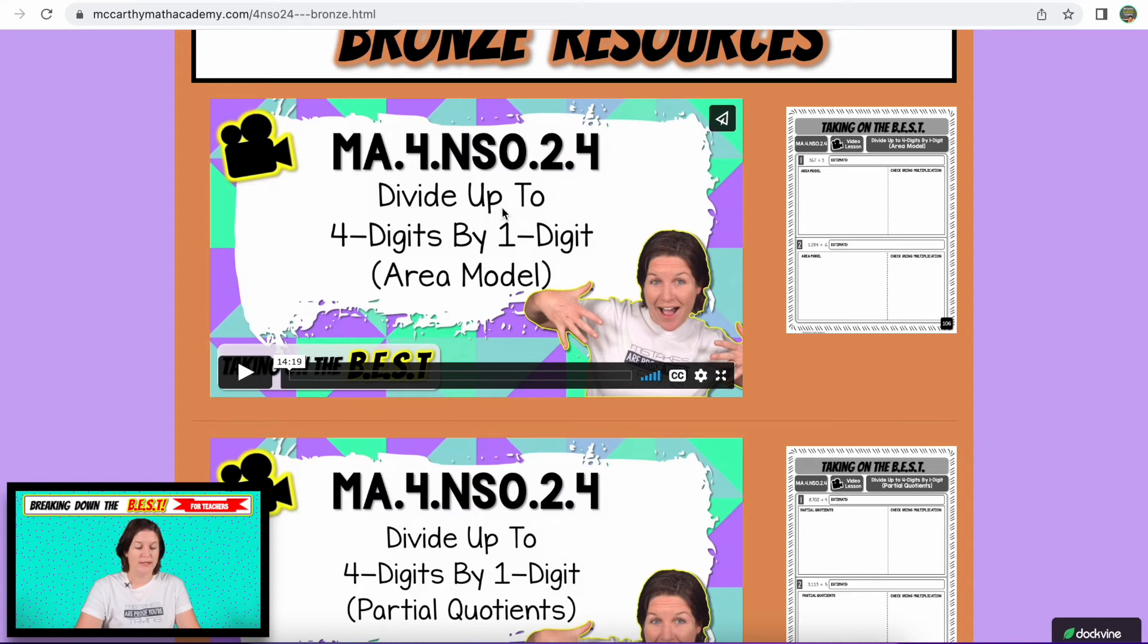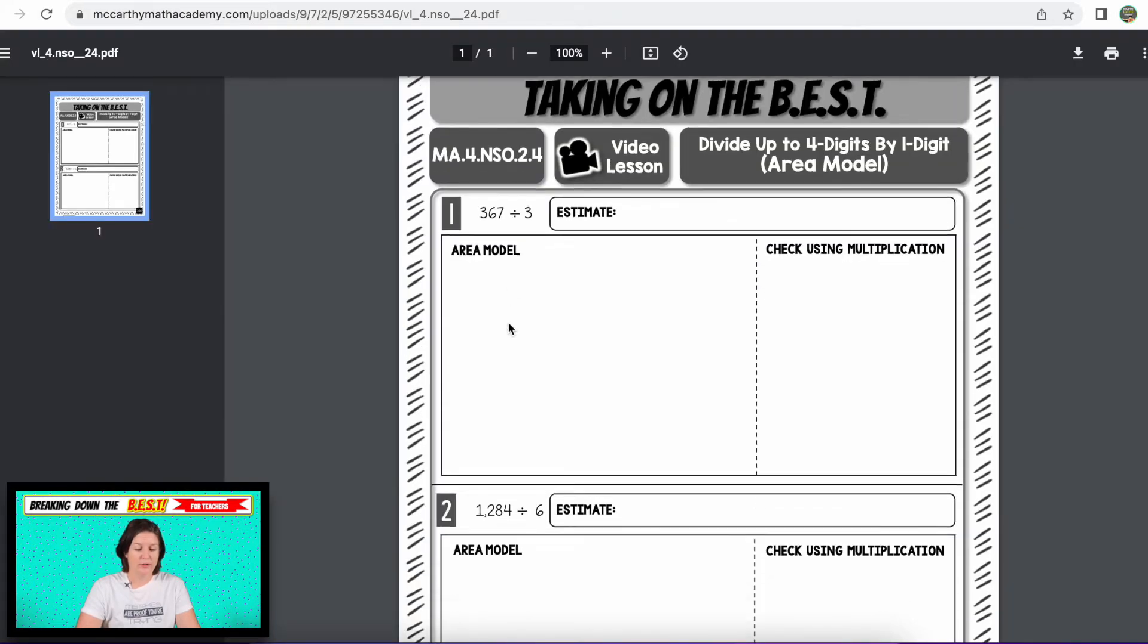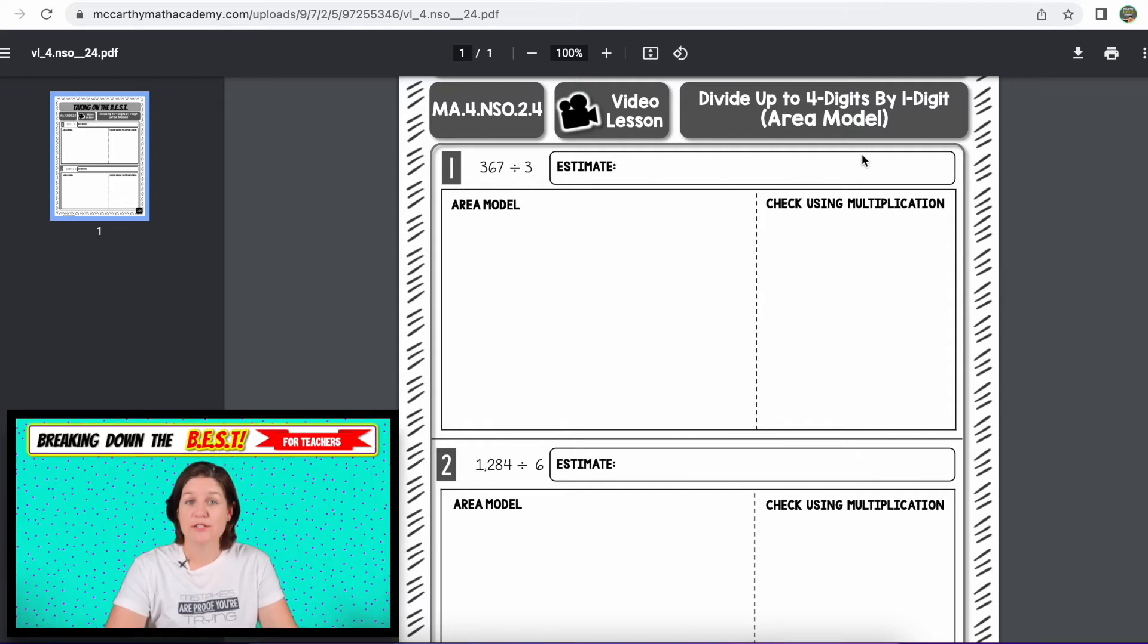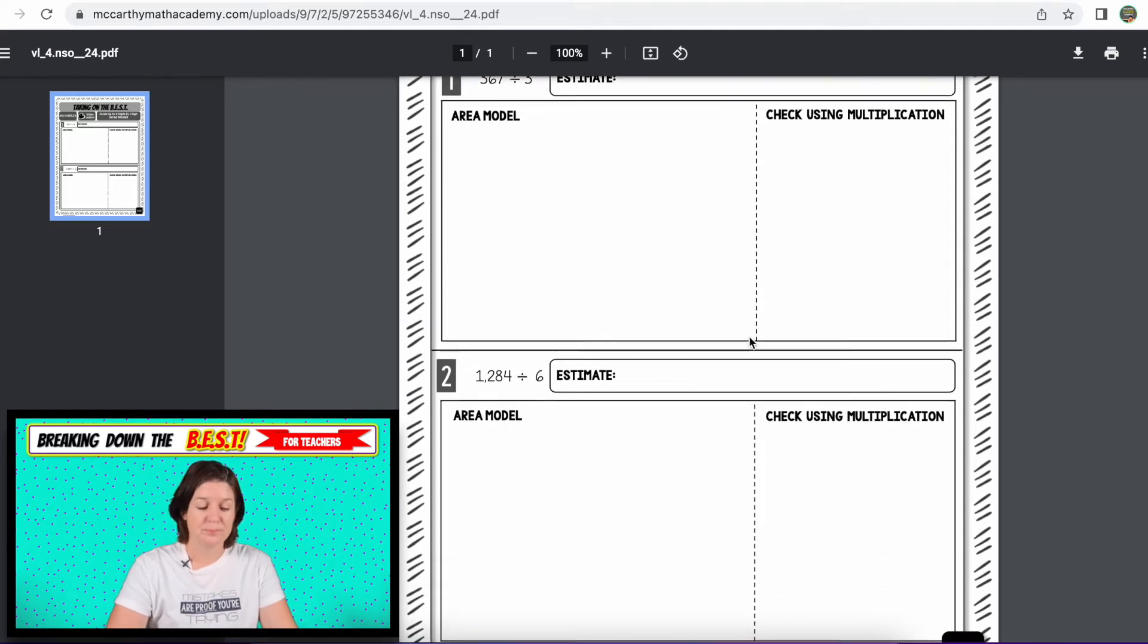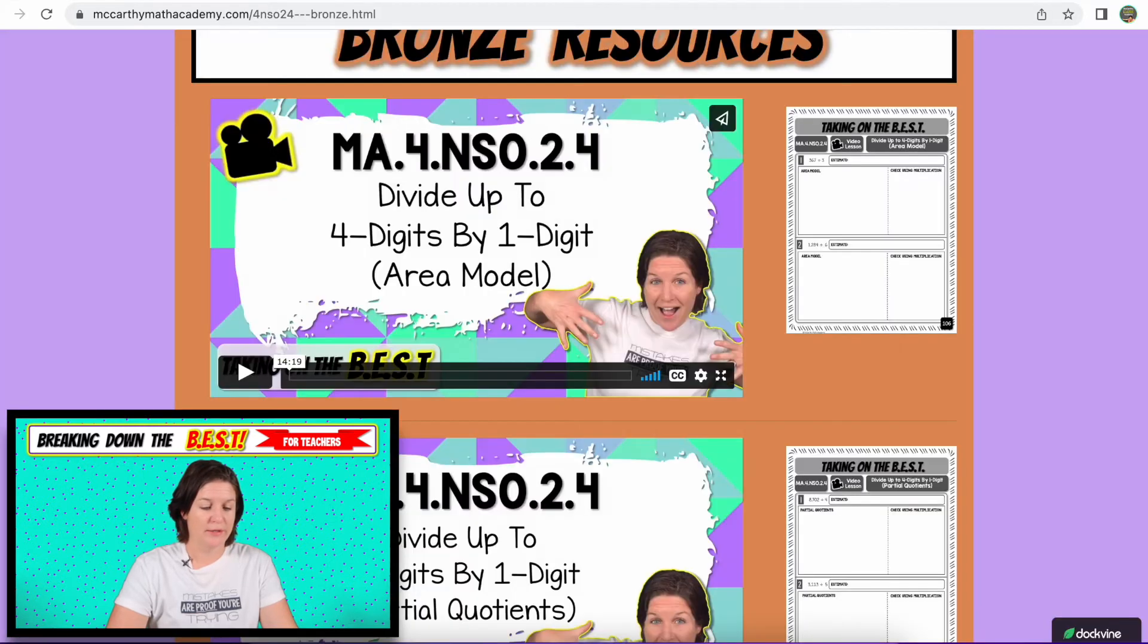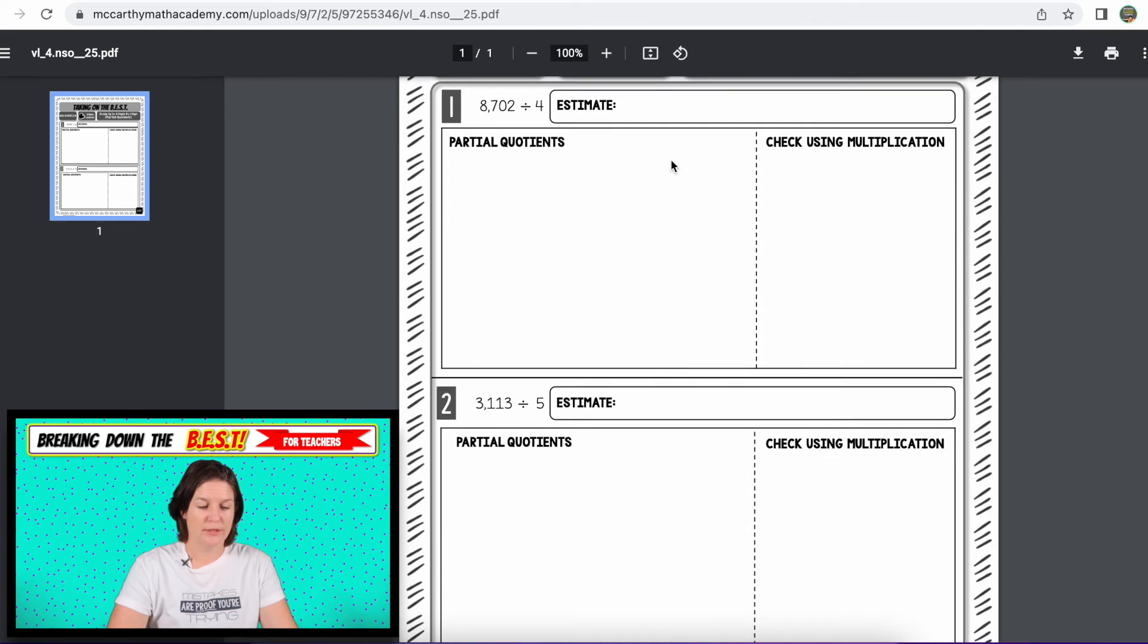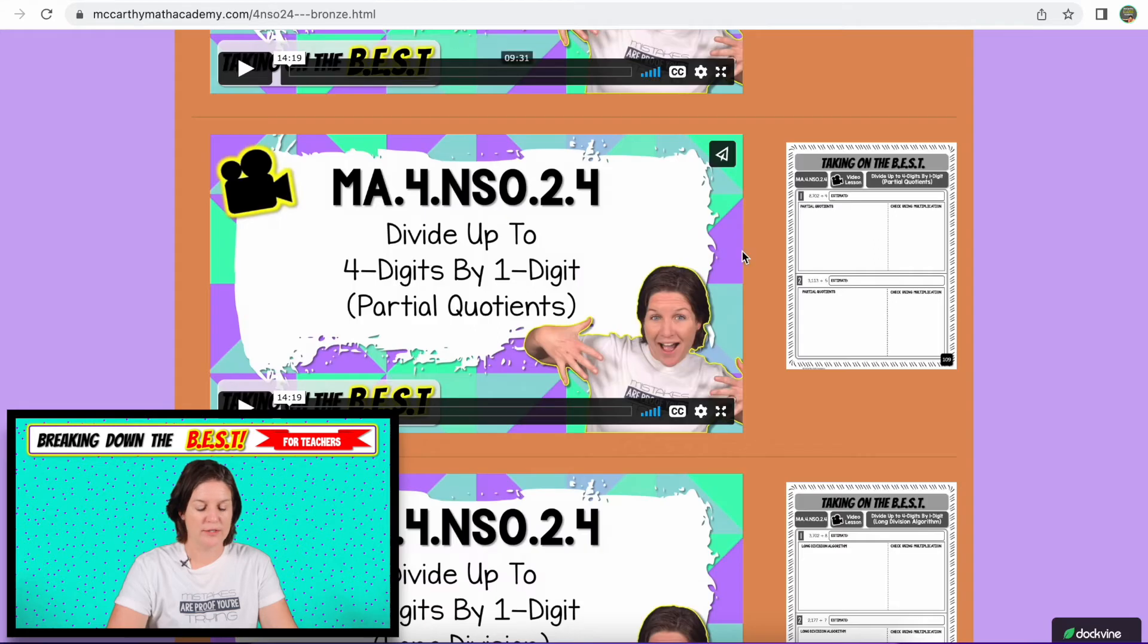The first one is dividing up to four digits by one digit using the area model and also checking using multiplication. You can see here, first we estimate to see if our answer is reasonable when we actually solve it. Then I'll break down in the video how we solve using the area model and how to check it using multiplication. There's a lot of work happening with the one problem. So we'll do another problem there as well. The next one is using the partial quotient strategy, same setup with the printable, estimate, partial quotients, check using multiplication.